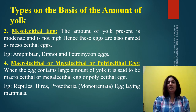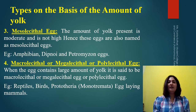The third type of eggs on the basis of amount of yolk is mesolecithal type of eggs. Here 'meso' means moderate and 'lecithal' means yolk. So if the egg contains moderate amount of yolk, those type of eggs will be known as mesolecithal type of eggs. The example is amphibian eggs.